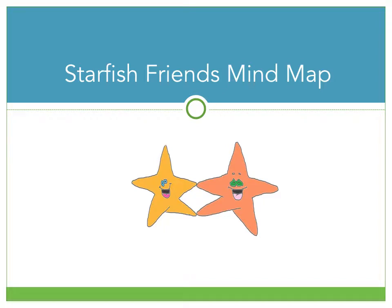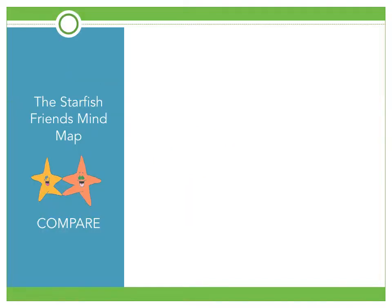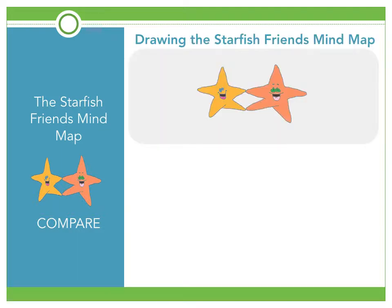In this video we're going to look at the Starfish Friends mind map. This mind map will prompt learners to compare two topics or two elements. It is made up of two starfish that are touching, with some of their arms separate from one another. We always start with the keyword or topic: topic one is placed on the left starfish and topic two on the right starfish.